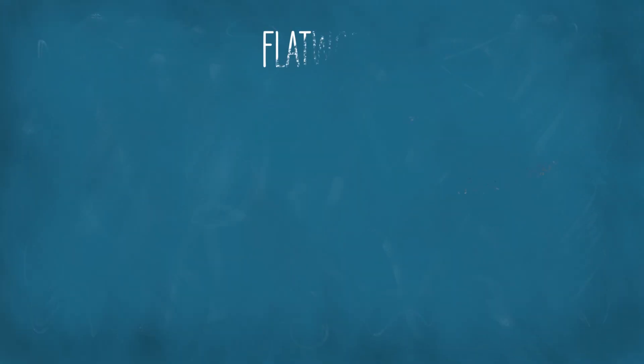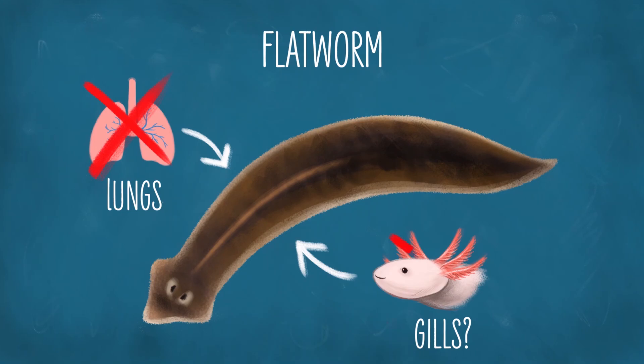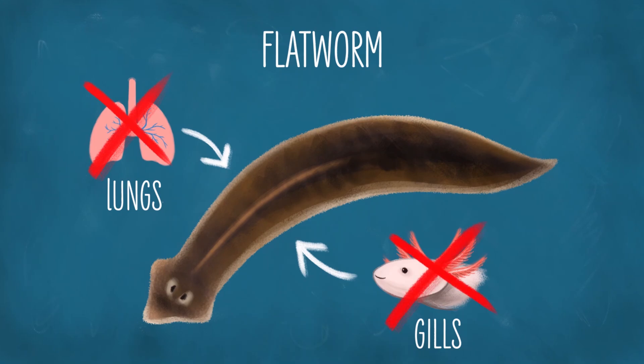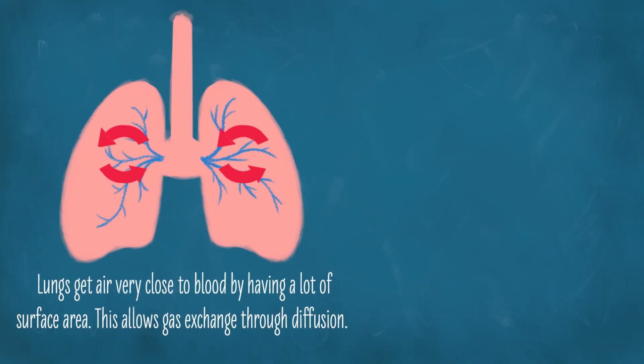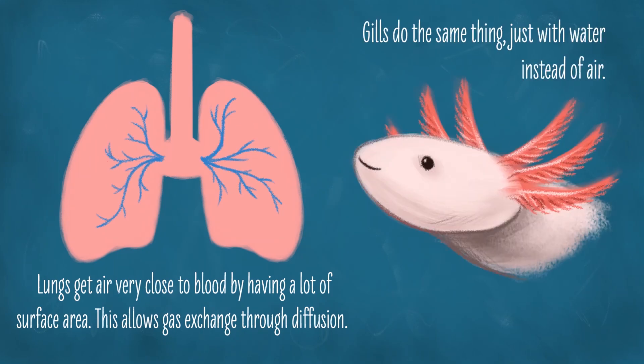This is a flatworm. It doesn't have lungs — does it have gills? Nope. It doesn't have a respiratory system at all, and this is largely because it doesn't have a circulatory system either. If you think about it, lungs are just a structure with a lot of surface area that gets air very close to blood so that gases can be exchanged by diffusion. Gills are basically the same thing, except they get water very close to blood so that gases can be exchanged by diffusion.